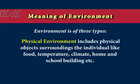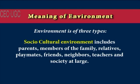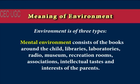Broadly speaking, environment is of three types. Physical environment includes physical objects surrounding the individual like food, temperature, climate, home, and school building. Socio-cultural environment includes parents, members of the family, relatives, playmates, friends, neighbors, teachers, and society at large. Mental environment consists of books available to the child, libraries, laboratories, radio, museums, recreational rooms, associations, and the intellectual tastes and interests of the parents.